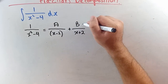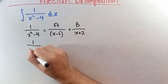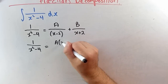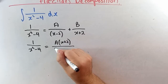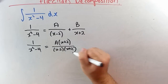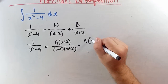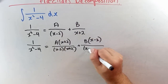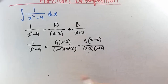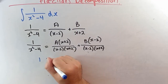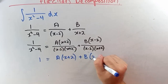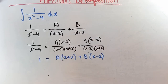Cross multiplying, 1 on x squared minus 4 equals a times x plus 2 over x minus 2 times x plus 2, plus b times x minus 2 over x minus 2 times x plus 2. Since the denominators on both sides are equal, we just consider the numerator: 1 equals a(x plus 2) plus b(x minus 2).